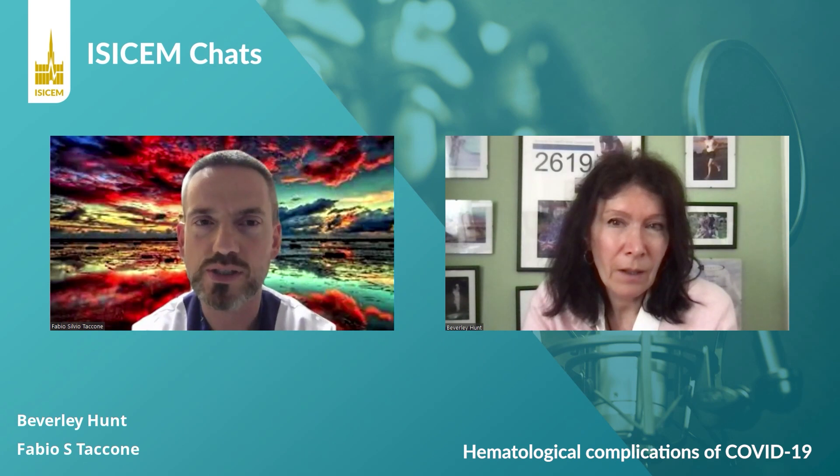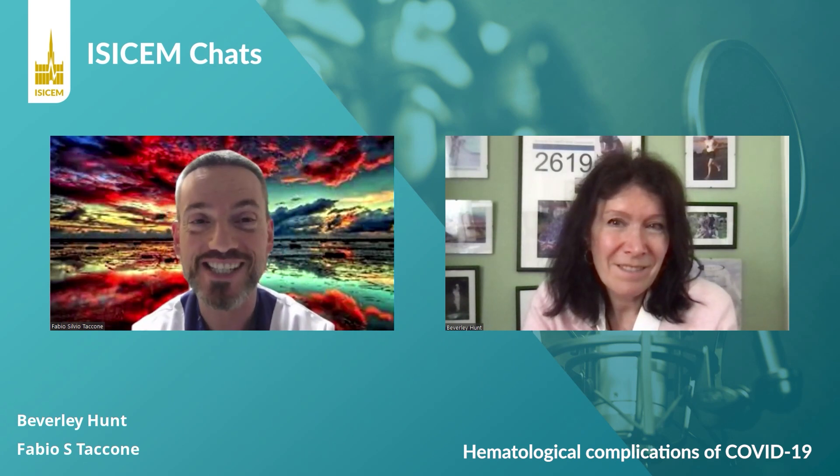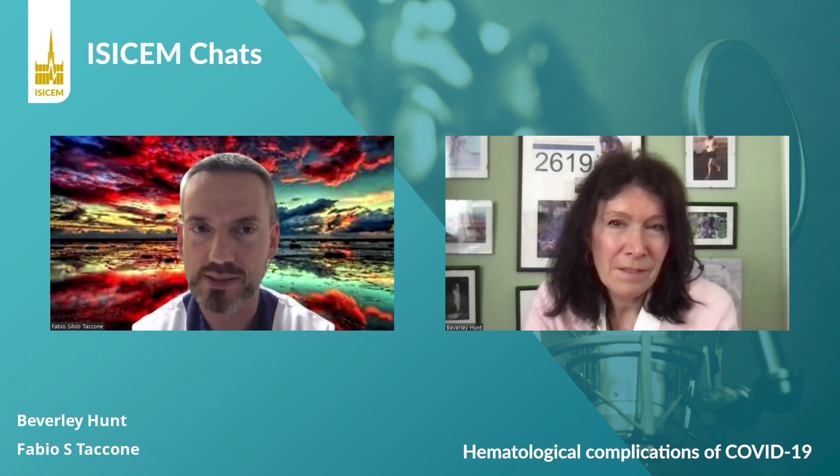COVID is a complex disease and we observe not only coagulation problems but other hematological complications — for example, autoimmune hemolytic anemia and macrophage activation syndrome. How should intensivists recognise rare hematological dysfunction that should trigger additional investigation? For instance, very high ferritin levels disproportionate to D-dimers and CRP, or unexpected anemia or thrombocytopenia on admission.